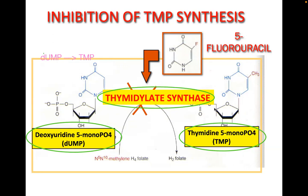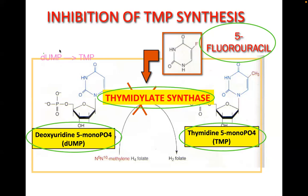The very important antineoplastic drug that inhibits thymidylate synthase is 5-FU, or 5-fluorouracil. Memorize that: 5-FU inhibits thymidylate synthase. It is used in anti-cancer therapy.